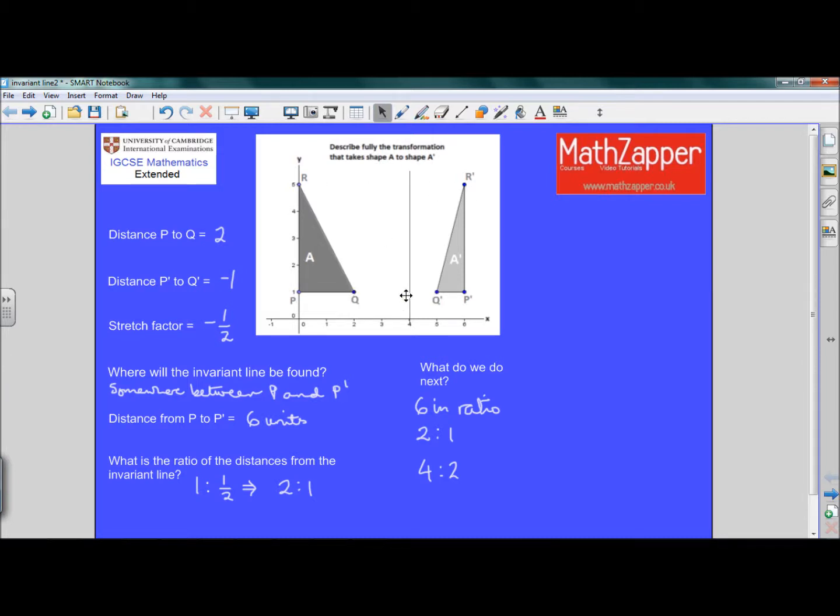So all the ratios of Q to Q dash, P to P dash, R to R dash, are all in the ratio of 2 to 1. And so the invariant line is this line here. And all we have to do now is simply write down the invariant line, which is invariant line is going to be X equals 4.